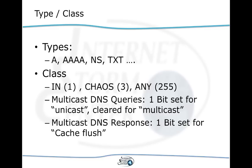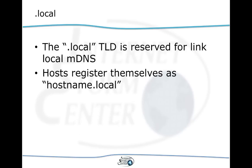The .local top-level domain is reserved for link-local multicast DNS records. If registering a hostname via multicast DNS, you would use hostname.local. Importantly, we cannot and should not use the .local TLD outside of multicast DNS. This causes conflicts when networks use .local as a local top-level domain they manage themselves — don't do this, as it will conflict with these auto-registered domains.